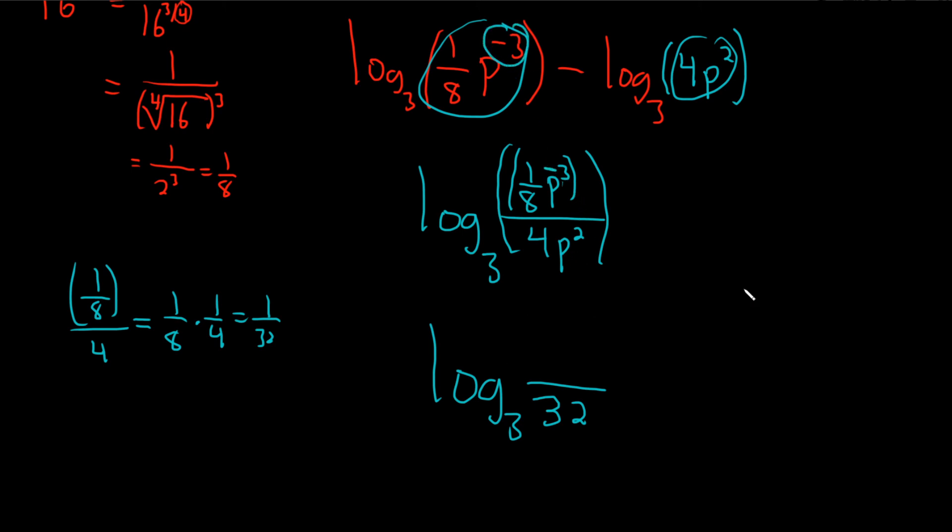So there we have it. You can bring it downstairs. You bring it downstairs and it becomes P squared, P cubed. Almost messed up there. Because if it's negative, you bring it down and it becomes a P cubed.